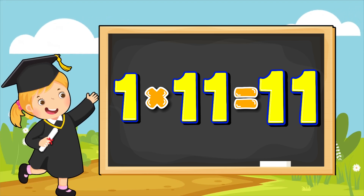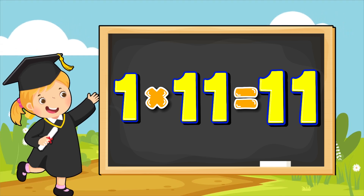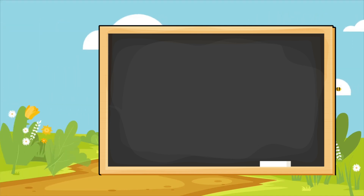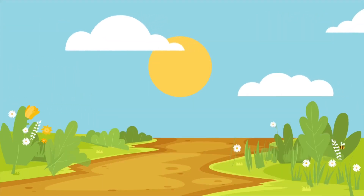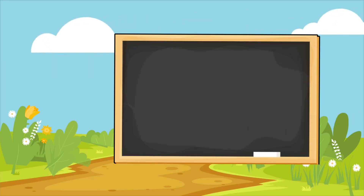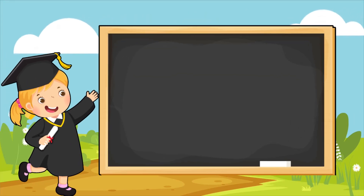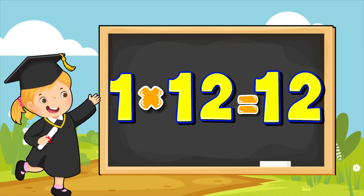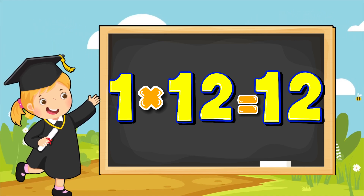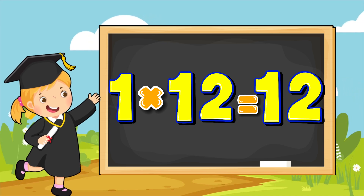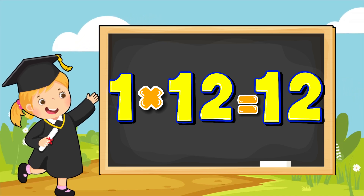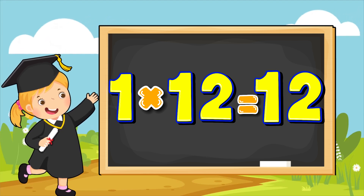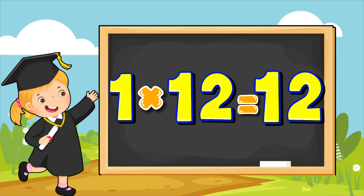1 multiplied by 11 equals to 11. 1 multiplied by 12 equals to 12. The last one. 1 multiplied by 12 equals to 12.